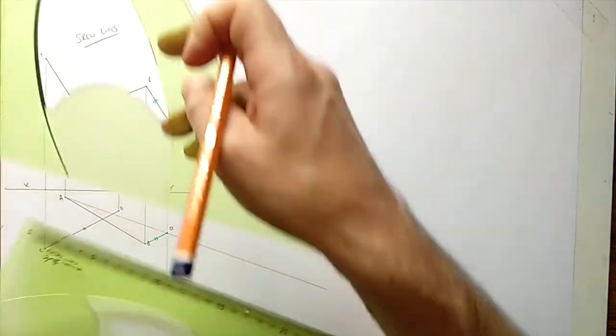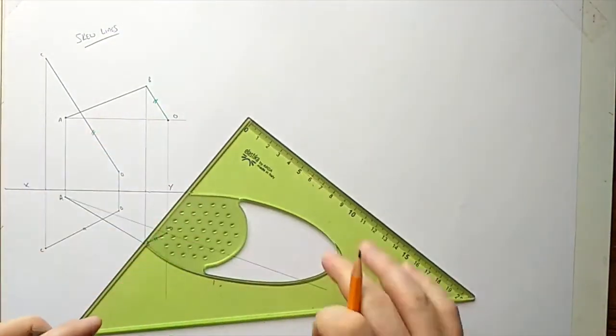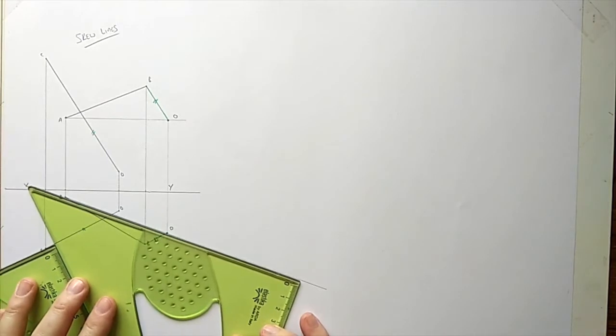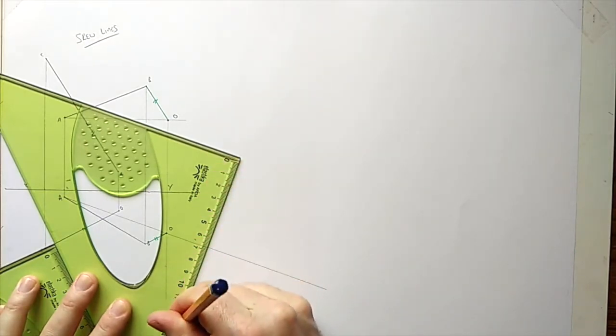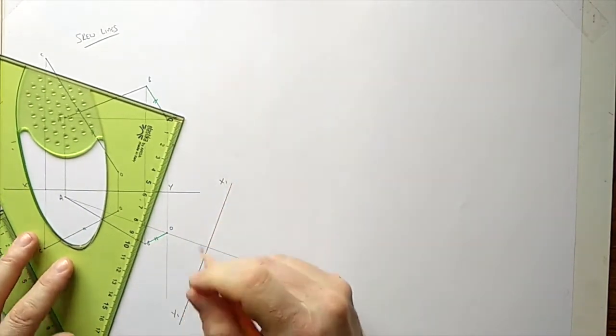So if we're looking along AO our X1Y1 is perpendicular to that. We just come a little bit out from the drawing so we have some space to work in and there we go, X1Y1.